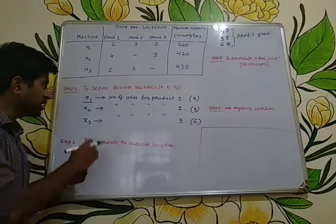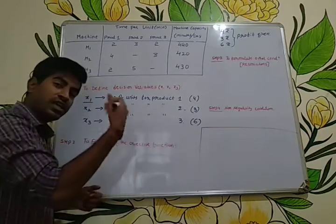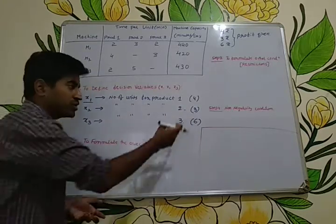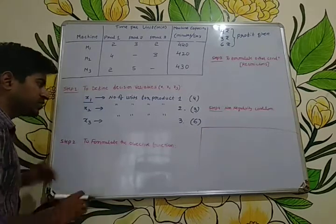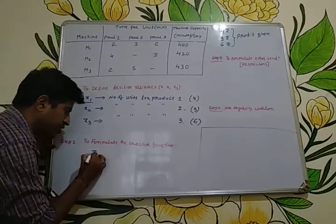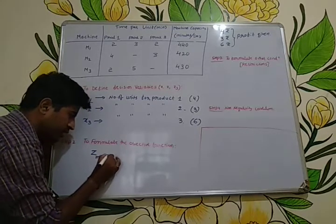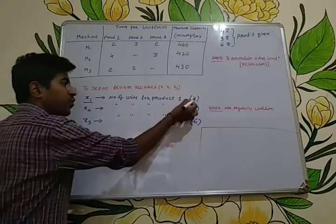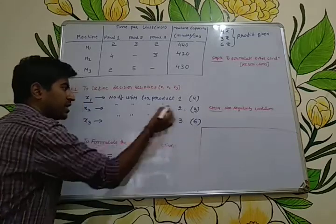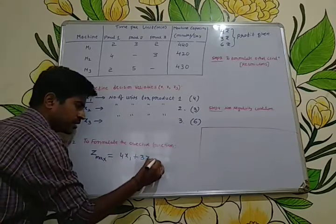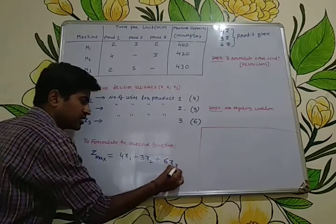Similarly, if we manufacture and sell x2 number of quantities we get 3 times x2, because for every unit of product 2 we get 3 rupees profit. So our objective function Z is to maximize Z = 4x1 + 3x2 + 6x3. This is the objective function.